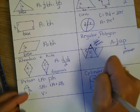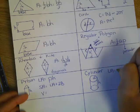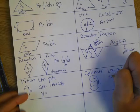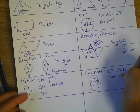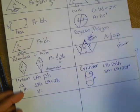You're going to need to know height and radius. So the LA, pi d h. SA is LA plus two pi r squared.